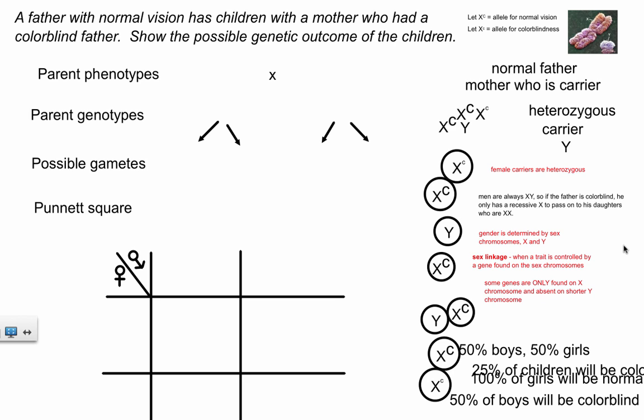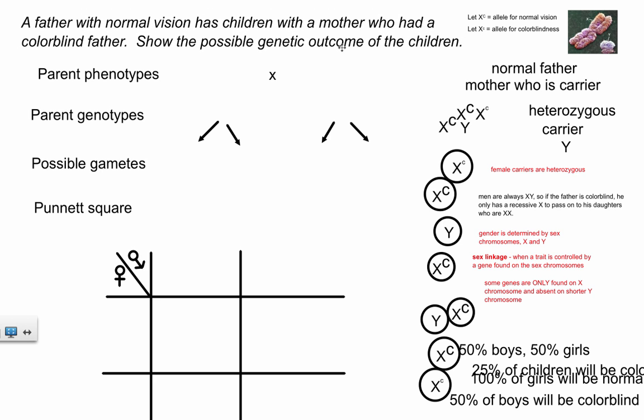Next, let's get into another type of genetic cross — this gets more exciting and challenging. I'm going to explain sex linkage while using an example, starting with the application. If you watched the previous video, I explained a simple monohybrid cross about eye color or something like that. Here we get into sex linkage, and now it matters whether we're talking about a man or a woman.